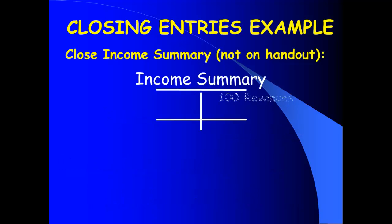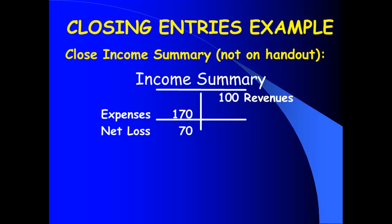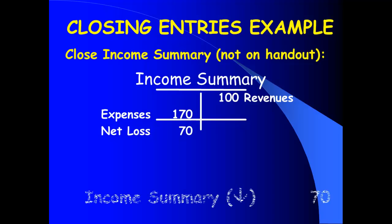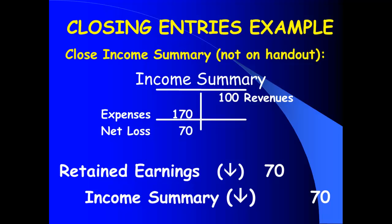Let's do another example — only changing the amount of expenses to $170. What's the balance in Income Summary now? A debit of $70. What does that represent? A net loss — because I have more expenses than revenues. We need to close Income Summary; it has a debit balance, so we close it with a credit to Income Summary. In this case, the debit goes to retained earnings. Debiting retained earnings makes that capital account go down — and incurring a net loss makes retained earnings go down too.